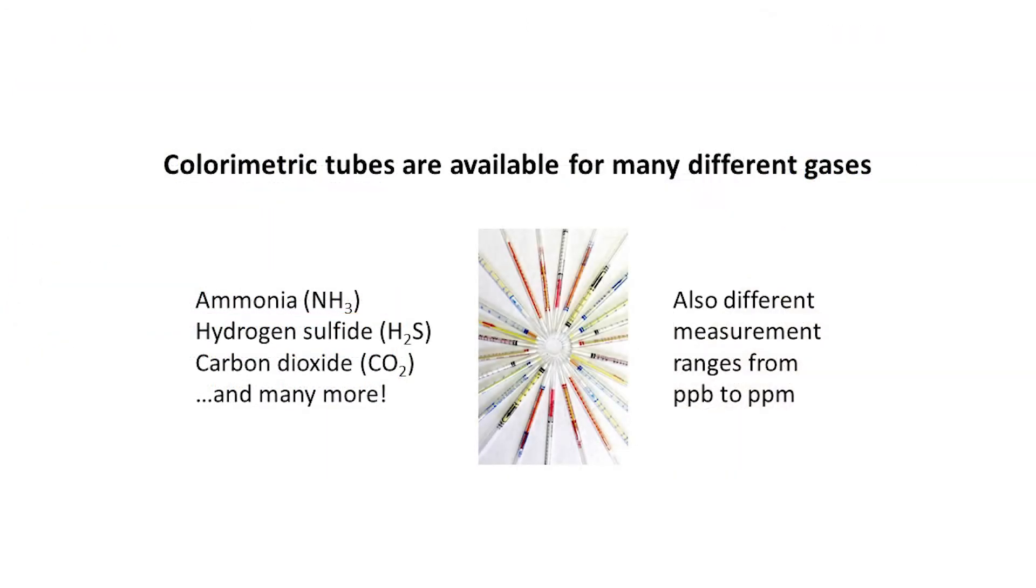The thin glass colorimetric tubes are available for dozens of different types of gases. The tube content is specifically reactive with the type of gas that is being measured, including those that may be found in farm animal environments such as ammonia, hydrogen sulfide, and carbon dioxide.